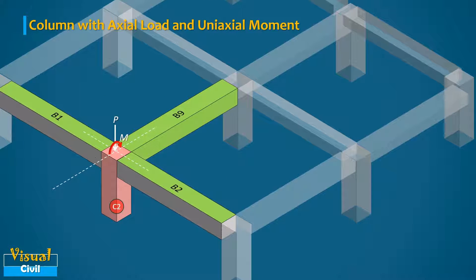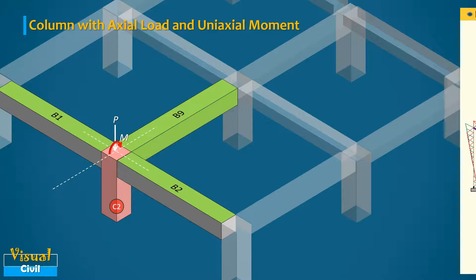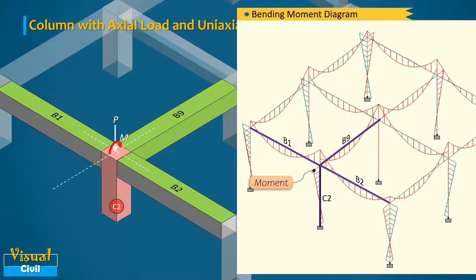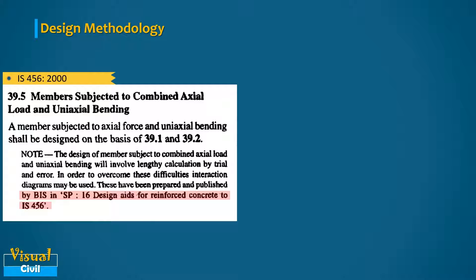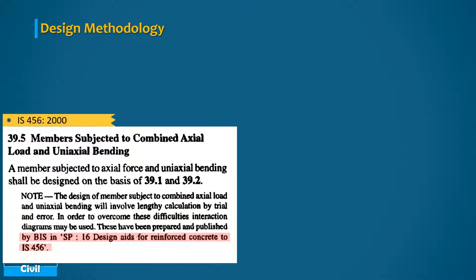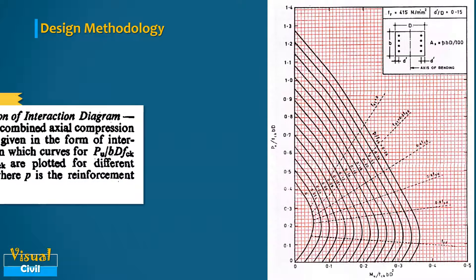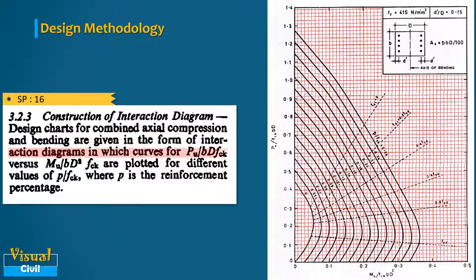This can be verified in the bending moment diagram computed using STAAD Pro software. IS 456:2000 gives the design methodology for this type of column. Clause 39.5 suggests the use of interaction charts given in SP16 for simplified design. In these charts, curves for Pu/fck·bd versus Mu/fck·bd² are plotted for different values of p/fck, where p is the reinforcement percentage.